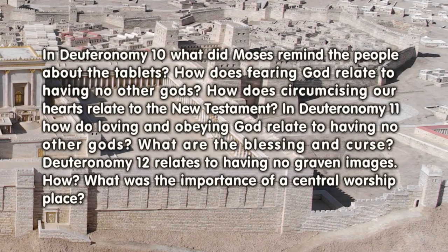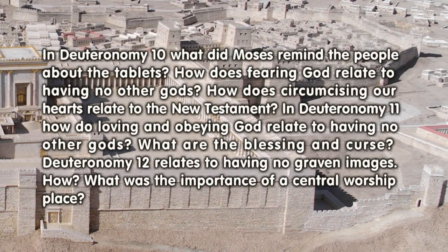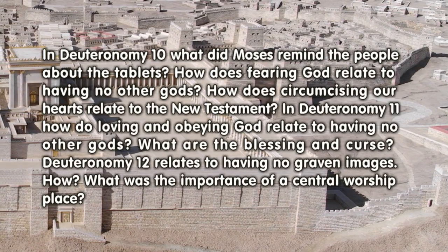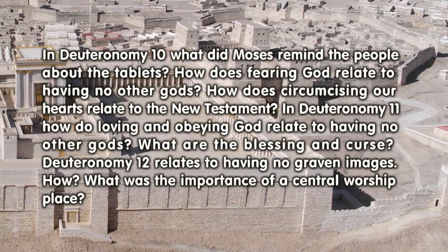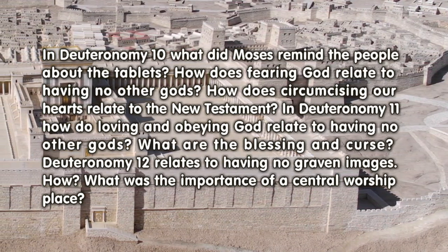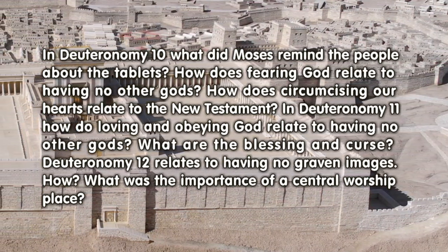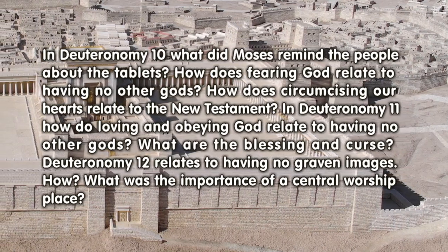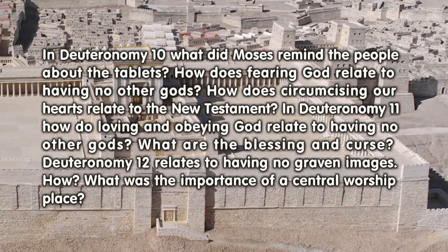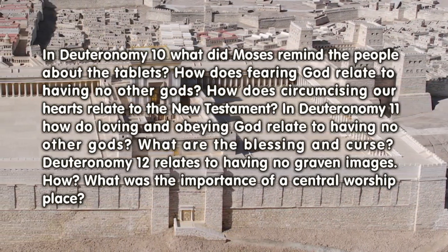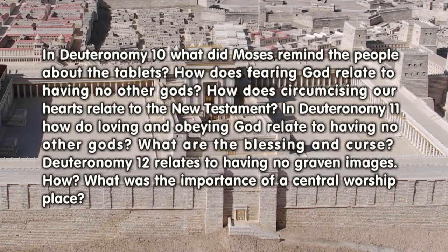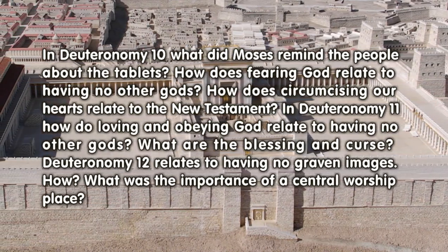In Deuteronomy 10, what did Moses remind the people about the tablets? How does fearing God relate to having no other gods? How does circumcising our hearts relate to the New Testament? In Deuteronomy 11, how do loving and obeying God relate to having no other gods?